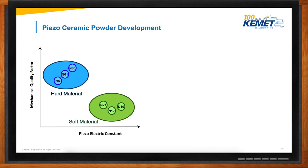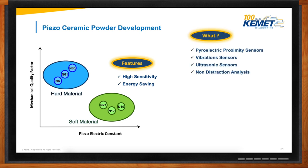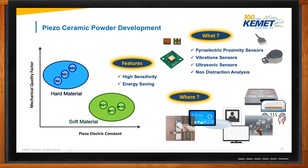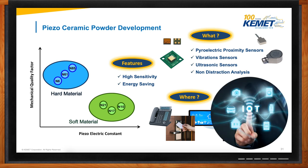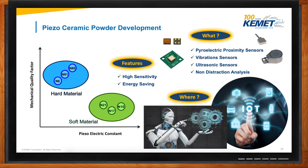When using this material, we discovered an interesting side effect. It has high sensitivity performance and is very energy-saving. So it's very useful for different sets of sensors. We make two types: pyroelectric proximity sensors and vibration sensors. Where do you use such sensors? There's a multiple set of applications — it's all about being smart, being connected. It's all about IoT. It's all about energy-saving in smart connected IoT.